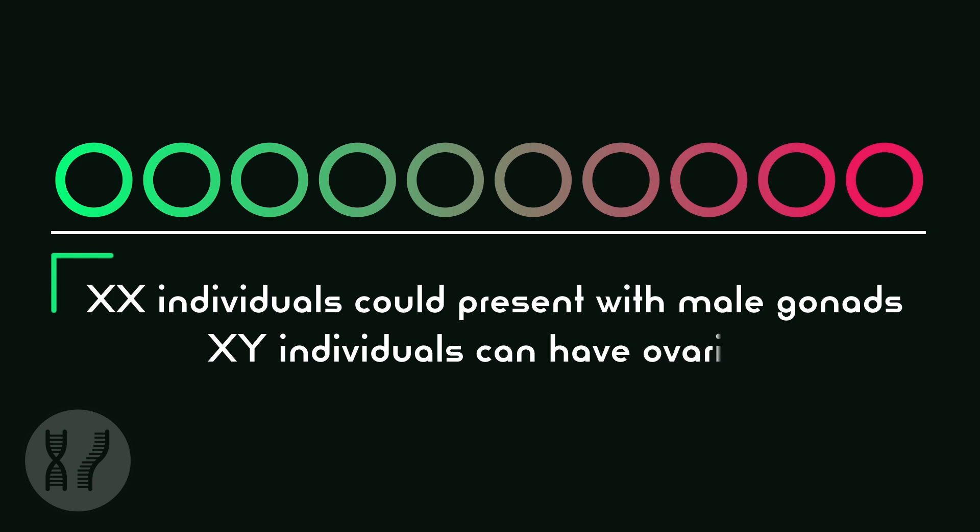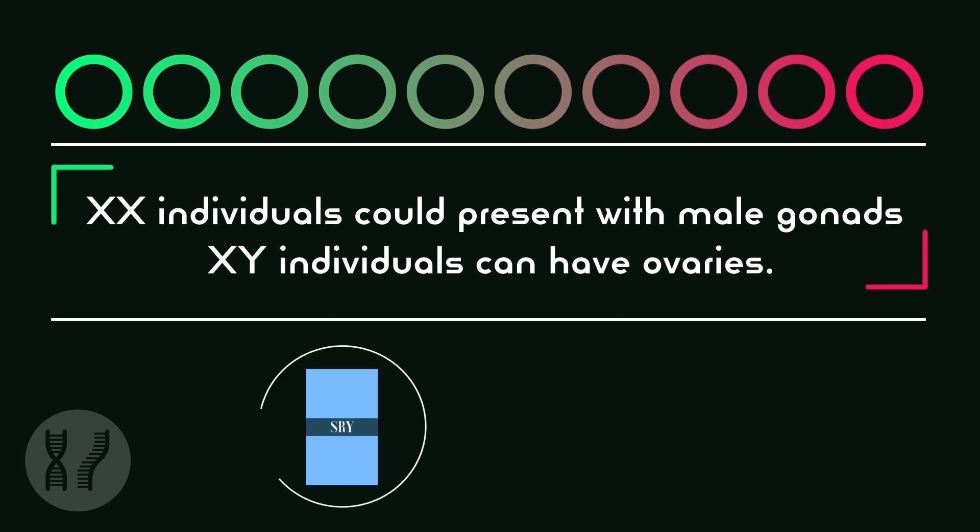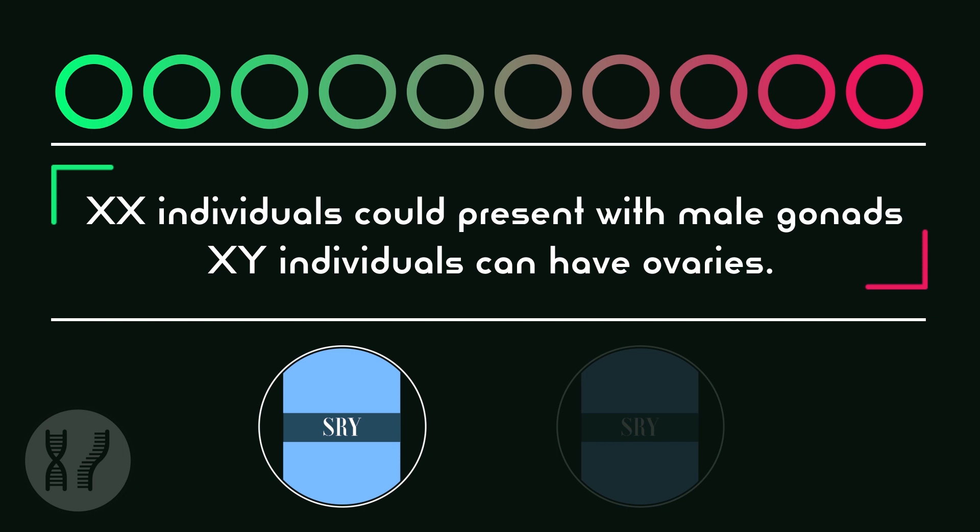XX individuals could present with male gonads, they write. XY individuals can have ovaries. Those unfamiliar with sex development might be wondering how these variations occur. Simple. The activation or inactivation of the SRY gene.